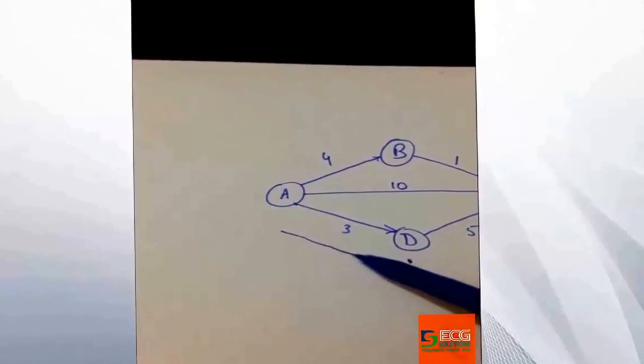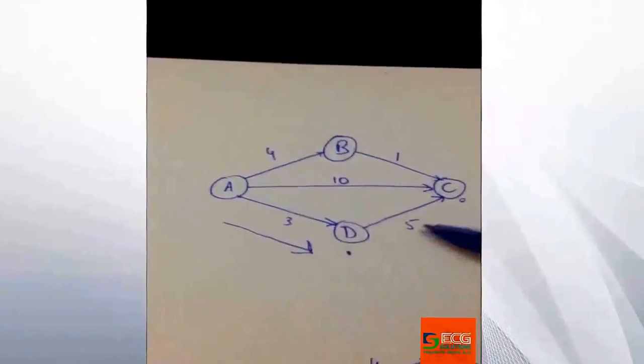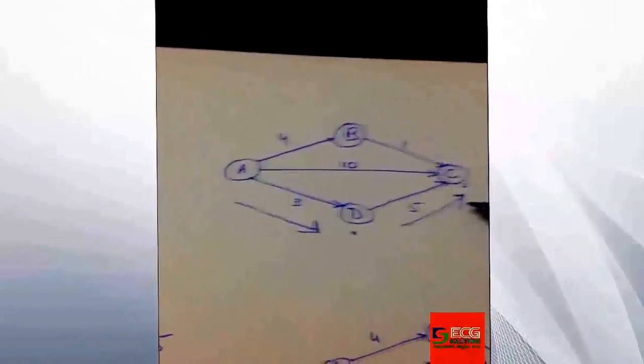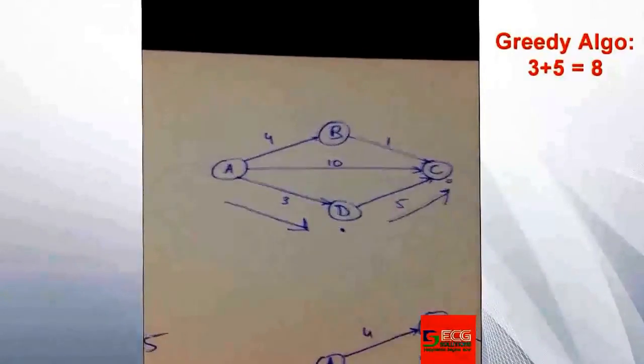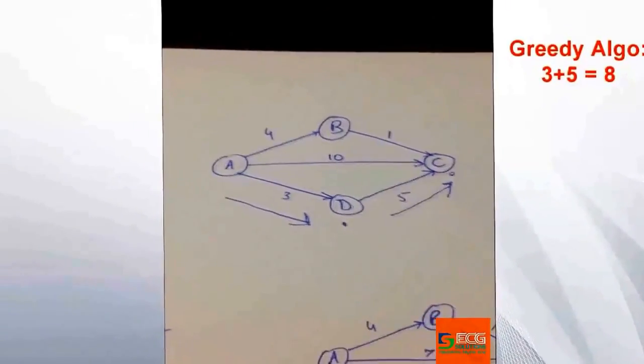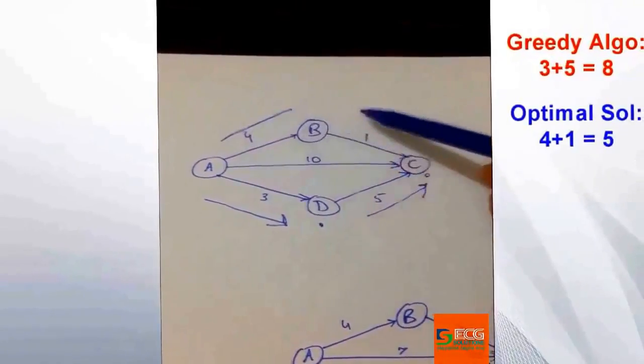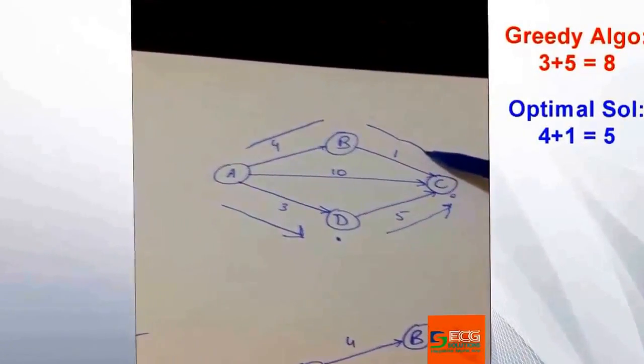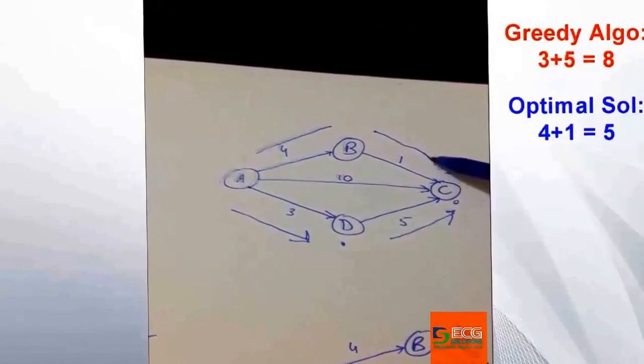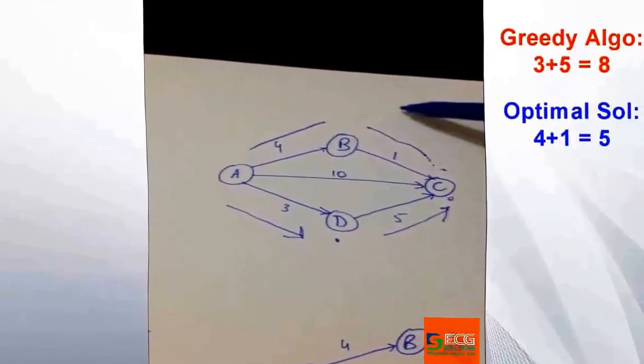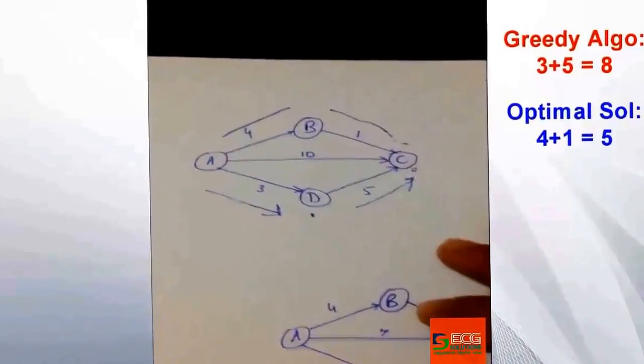From D to C we have only one path, so we need to take 5. The total solution is 3 plus 5 equals 8. But if we take a look, 4 plus 1 was the minimum distance that we need to cover for the optimal solution. In this case, greedy algorithm fails again.